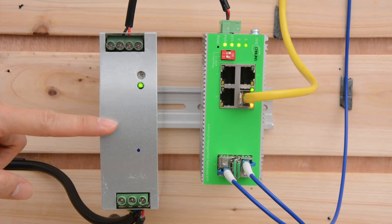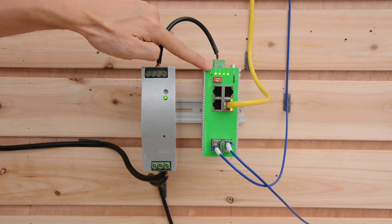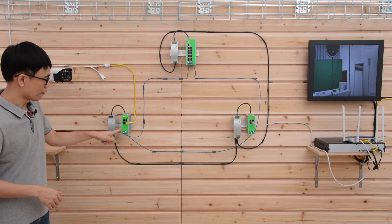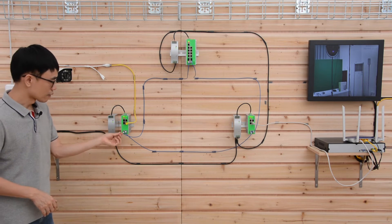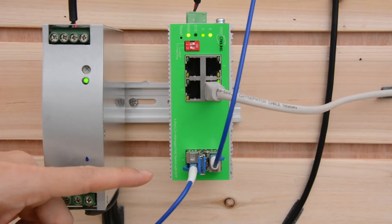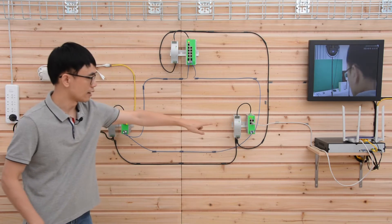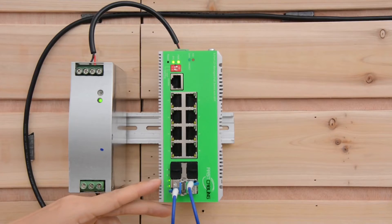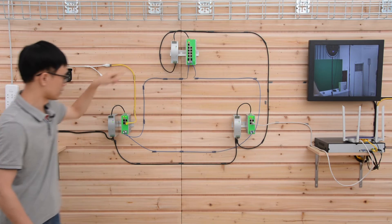This is the power supply unit. It's supplying the power for this industry grade switch. And from this switch, I'm using the fiber optic cable to link to the second switch. And from the second switch, it's connected to the third switch. And the last switch also connected to the first switch.